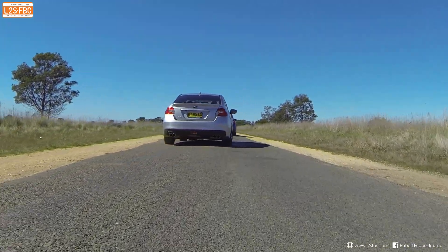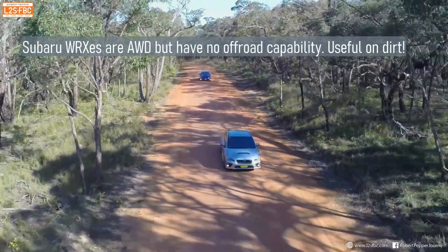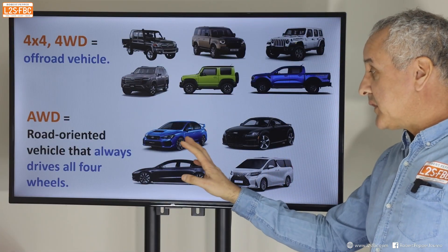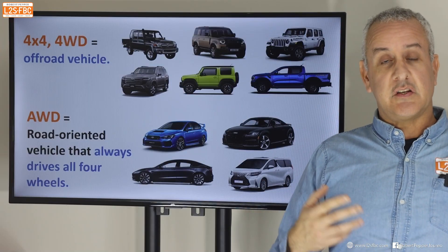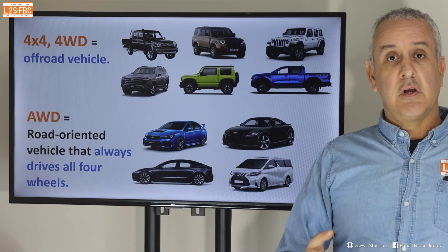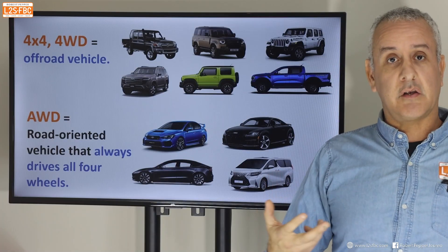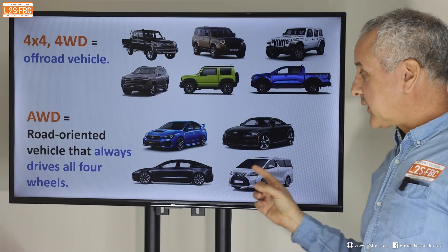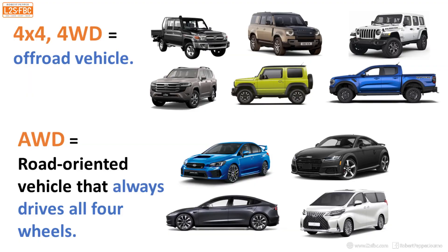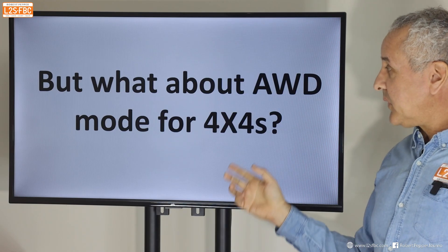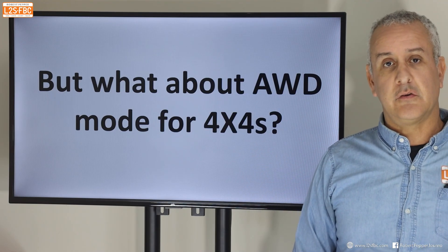What is AWD commonly understood to mean? It means a road-oriented vehicle that always drives all four wheels — like the Subaru, many Audis, even some Teslas if they've got a motor front and rear, and even some vans. There's no off-road capability in these vehicles at all; it's purely done for on-road grip. But they are AWD, and you could also argue in the literal sense they are also 4WD or 4x4.